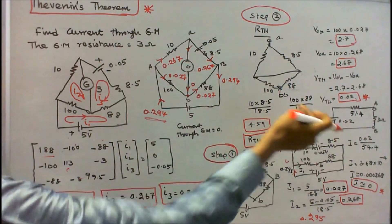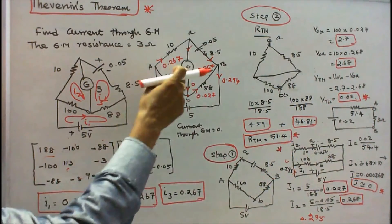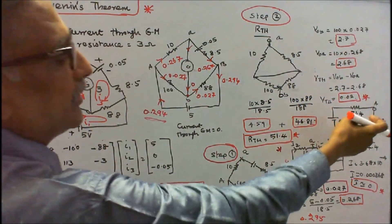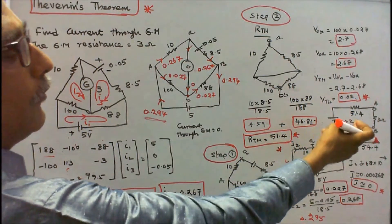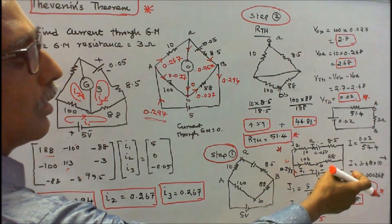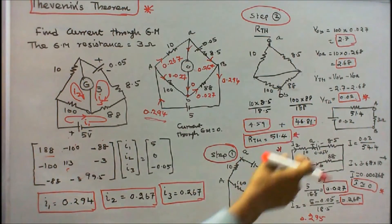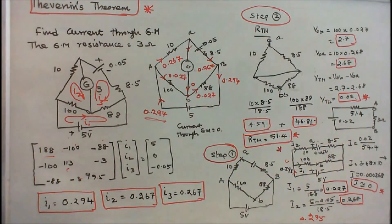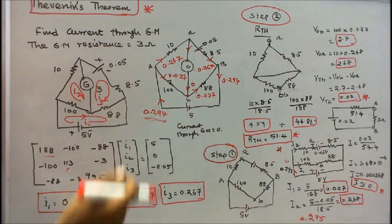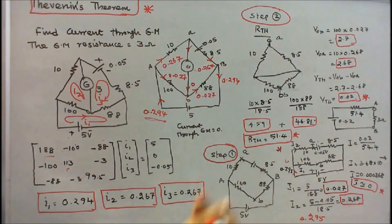I redraw the Thevenin's equivalent circuit with 0.02 volts in series with 51.4 ohms. The load resistance is 3 ohms, so the current I equals 0.02 divided by 51.4 plus 3, which is 54.4, giving 0.00368 amperes — almost zero. The advantage of Thevenin's theorem is that I can now vary the load resistance to any value — 3, 5, 10, or any other — and easily find the current through it each time.